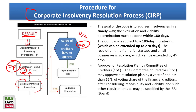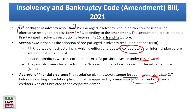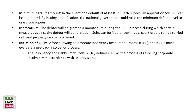Though in CIRP, no preliminary homework has to be done. Once the default is done, appoint the insolvency resolution professional, moratorium period is there, once it is over the credit committee is formed, then a decision is taken — simple. But for PPIRP — which is for smaller defaults for MSMEs — a lot of homework has to be done. Minimum default amount is 10 lakhs, maximum one crore. The moratorium period allowed here is 120 days.